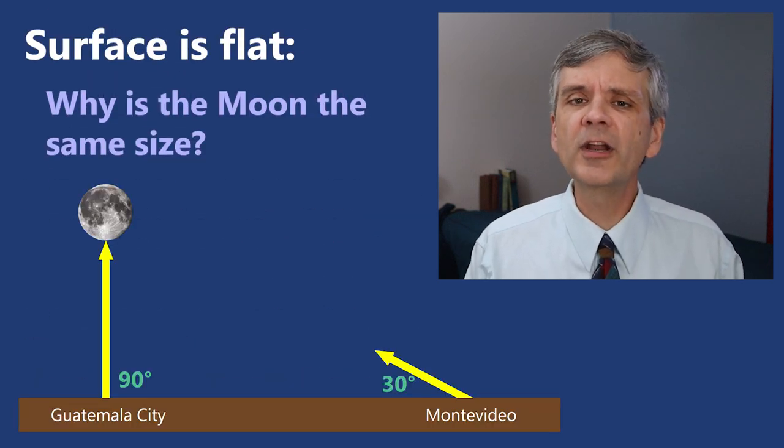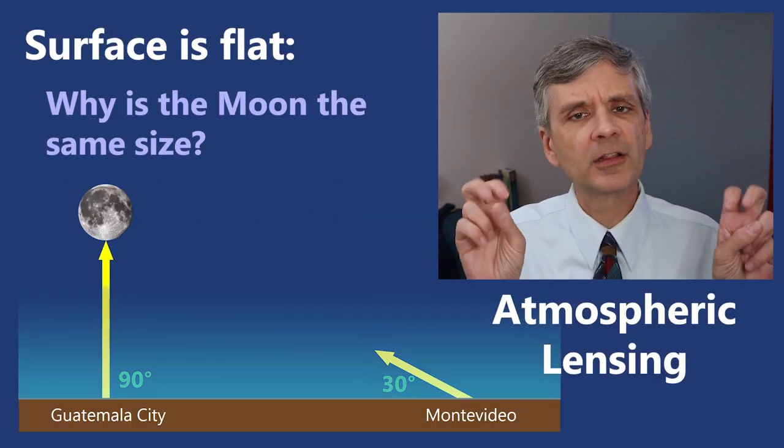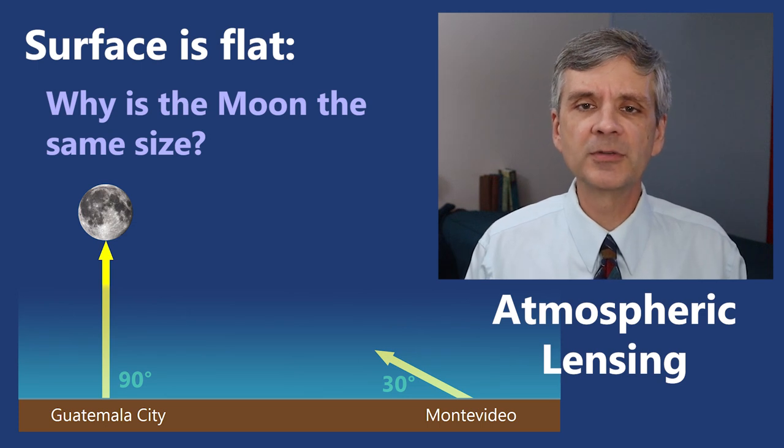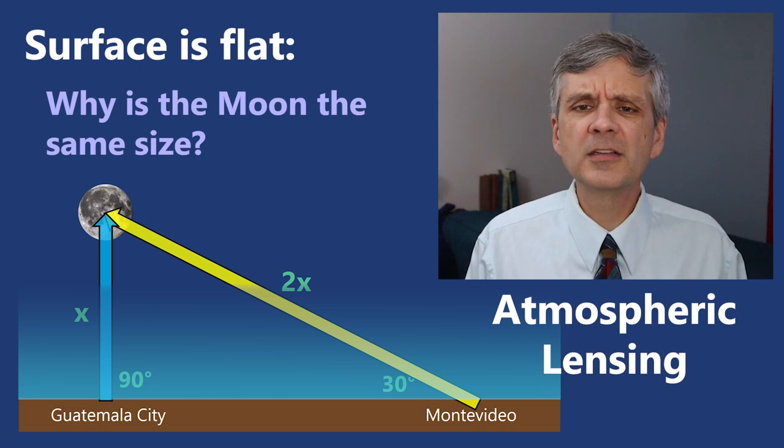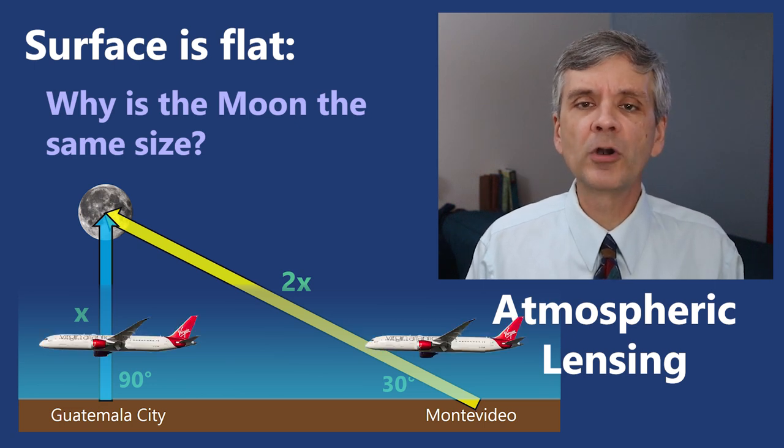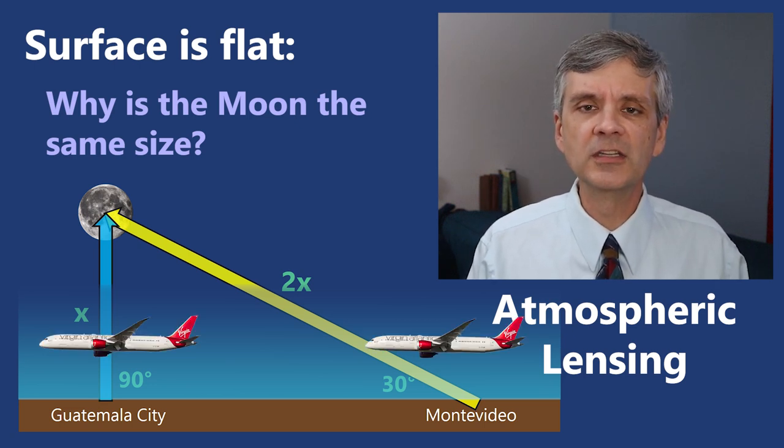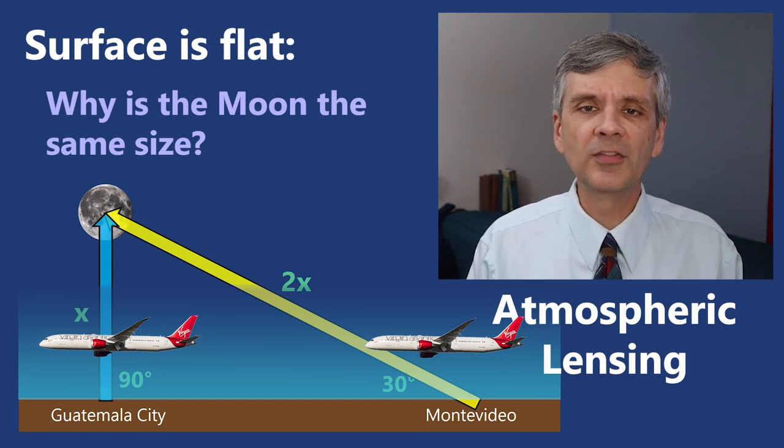And if the earth is flat, one answer would be to say that atmospheric lensing makes the moon appear the same size, even though the distances are different. But the problem with that is that you still see these same angles 40,000 feet above each of those cities, which is above 80% of the atmosphere.